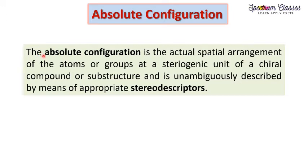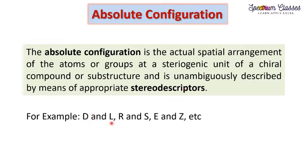The absolute configuration is the actual spatial — three-dimensional — arrangement of atoms or groups at a stereogenic unit of a chiral compound or substructure, unambiguously described by appropriate stereo descriptors. The stereo descriptors include DL, which is used for amino acids and carbohydrates, whereas RS stereo descriptors are used for organic molecules, and EZ for cis-trans type molecules. There are also endo/exo, re/si face descriptors among others.